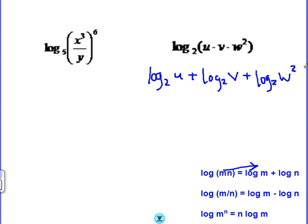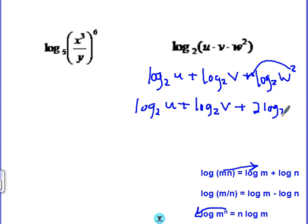Now we have an exponent. That exponent can become a coefficient, a multiplier out in front of the log. So to finish this off, we're going to go to log base 2 of u plus log base 2 of v plus 2 times log base 2 of w.